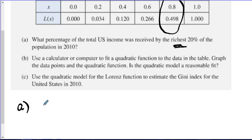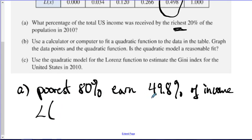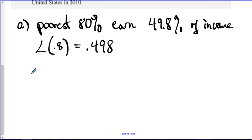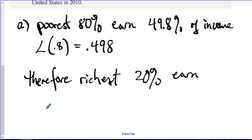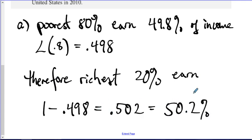The richest 20%, I'd have to look at this column here where I can determine the poorest 80% earned 49.8% of the income. So the poorest 80% earned this fraction of the income, so the richest 20% would earn the other fraction of the income. If the bottom 80% get 49.8%, then the rest of the population, the other 20%, gets the other 50.2% of the income.